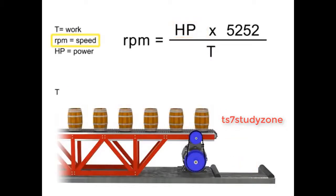If speed remains constant, then torque and horsepower are proportional. As the torque increases, horsepower also increases to maintain constant RPM.